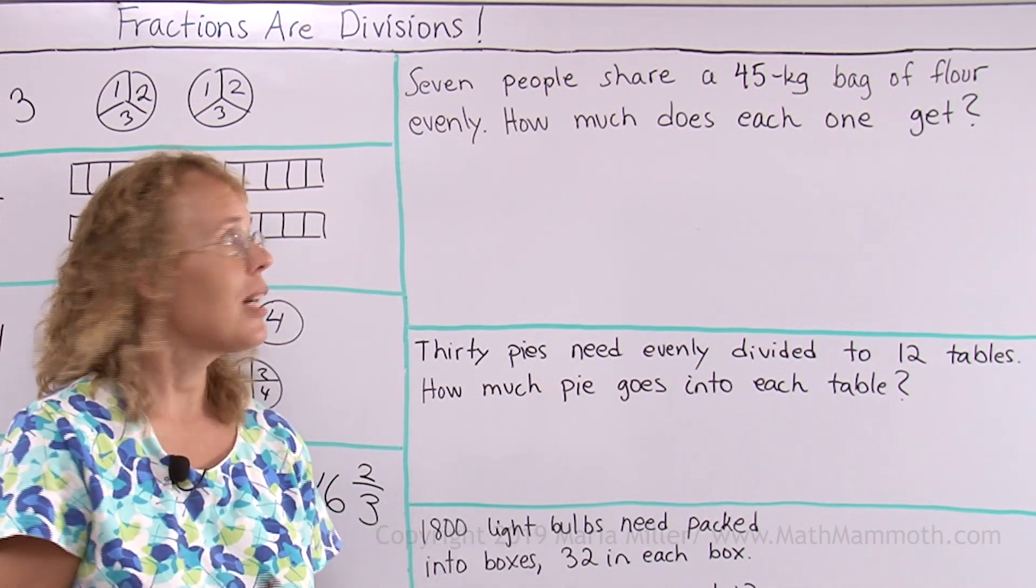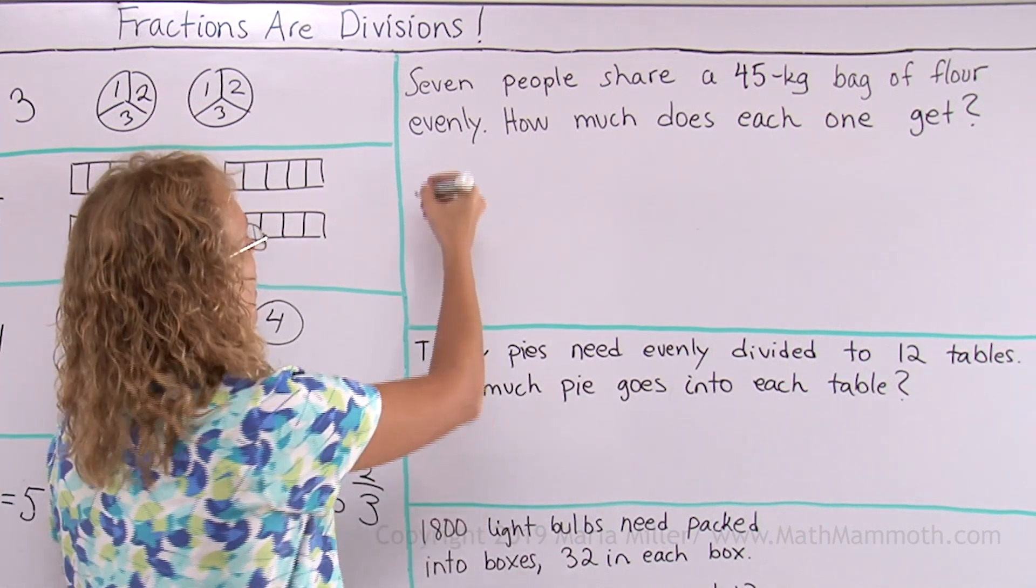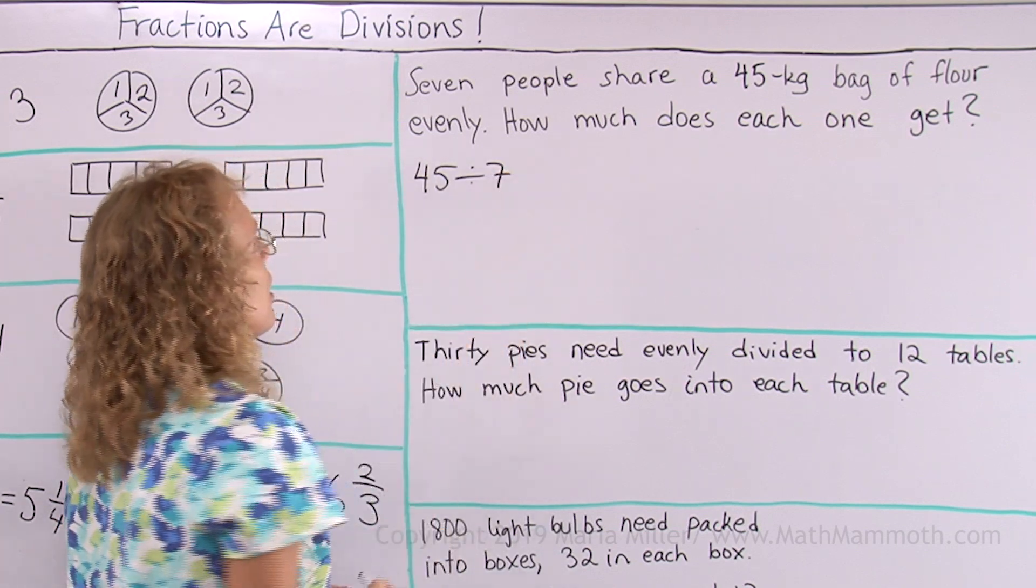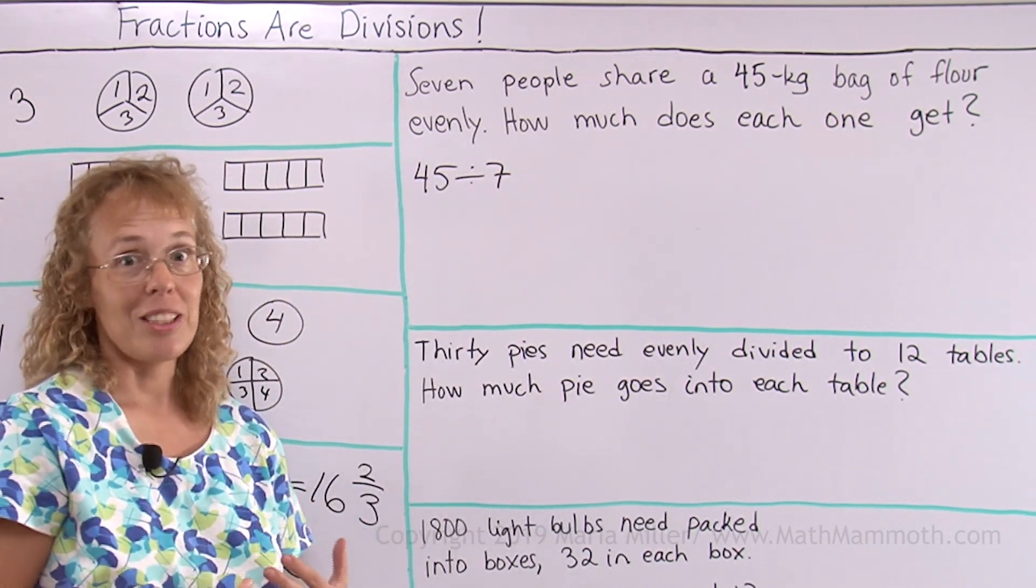This is a simple division problem, right? All we need to do is 45 divided by 7. Okay, but the way we do it, there's different ways to do it.